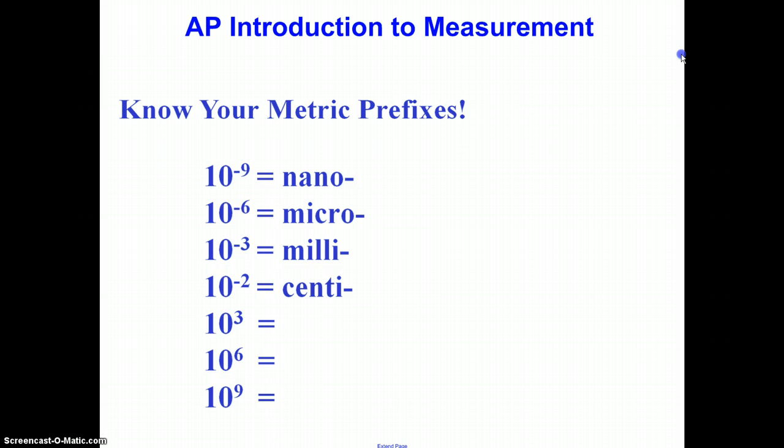Now we switch over at exponents greater than 10 to the zero, and the most common above that is 10 to the third, a thousand, which is kilo. Kilometer, kilogram. The standard unit of mass in physics is the kilogram, not the gram.